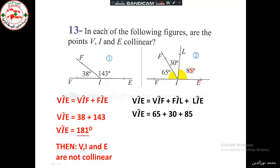The sum is 180°. So yes, they form together a supplementary angle. They are supplementary and form a straight angle and straight line, so they belong to the same straight line. Therefore, the points V, I, and E are collinear.